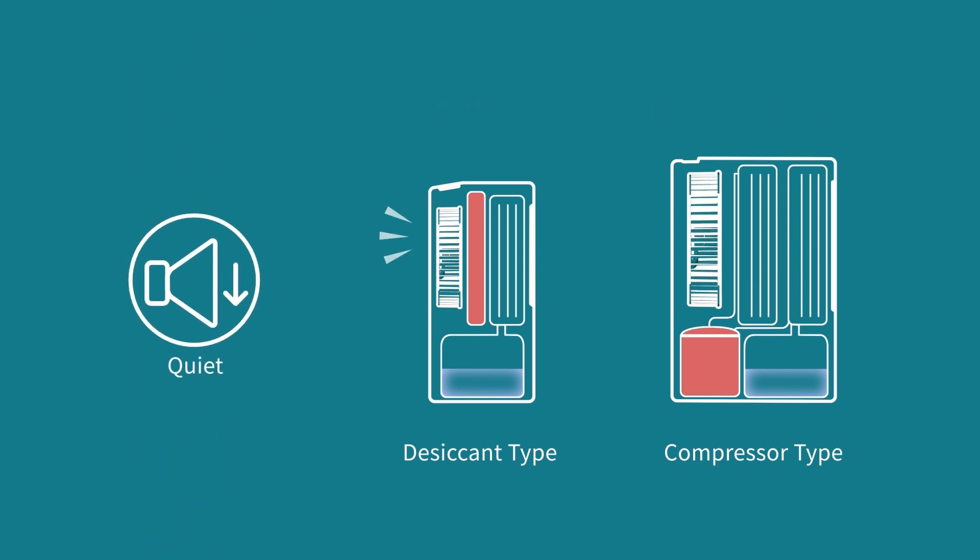Desiccant dehumidifiers run quietly by motor, while compressor types generate louder noise.